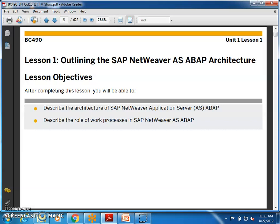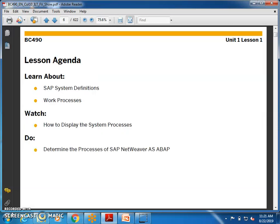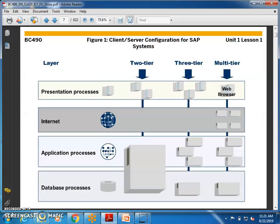We will first describe the architecture of SAP NetWeaver and then go over the role of work processes in SAP NetWeaver. We all know the three-tier architecture. A single-tier architecture is where you have your desktop or laptop which is not connected to any other system — that can be considered as a one-tier architecture.